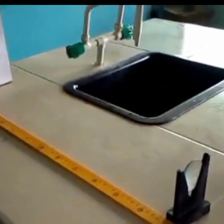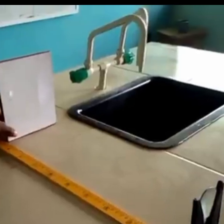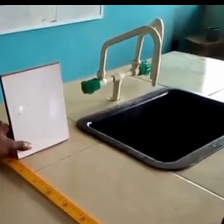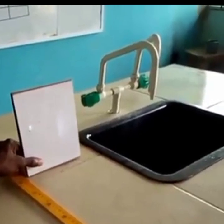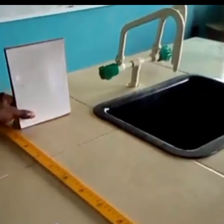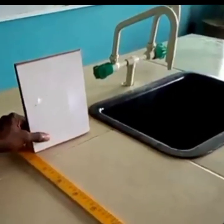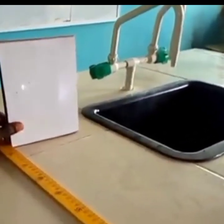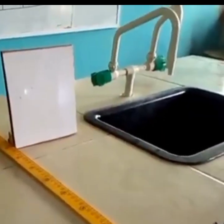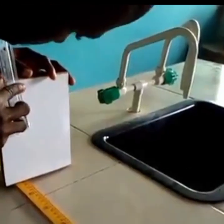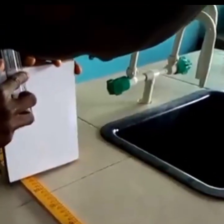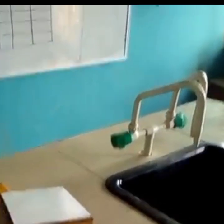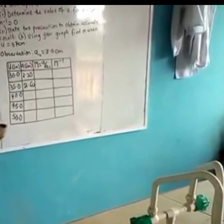Now let's go for the next measurement. We should adjust u to be 35 centimeters and see what would happen. When we adjust to 35 and move the screen closer, we find the sharp image. The measurement gives 2.5, so we record 2.50 centimeters for u equals 35.